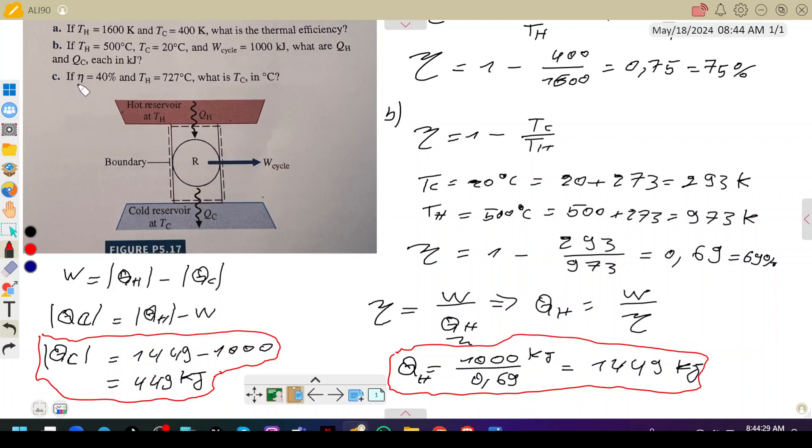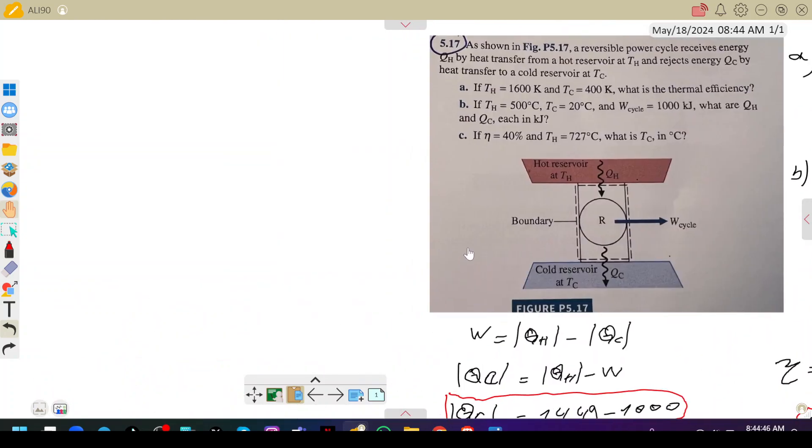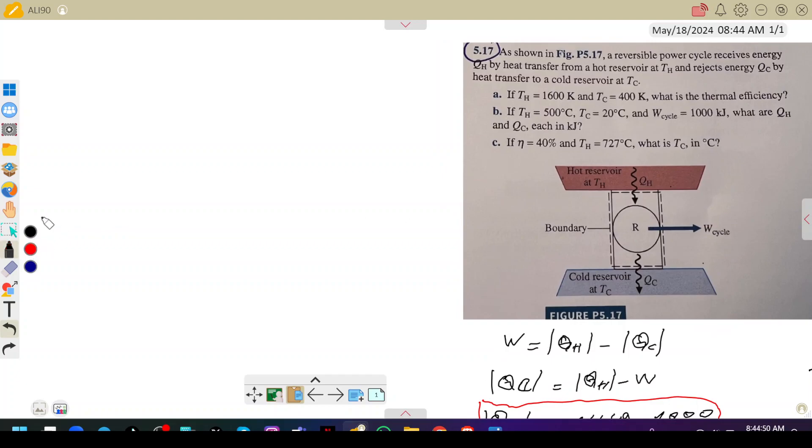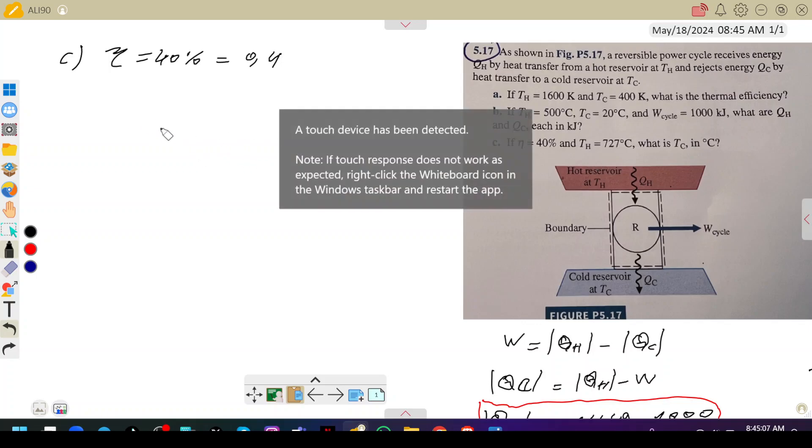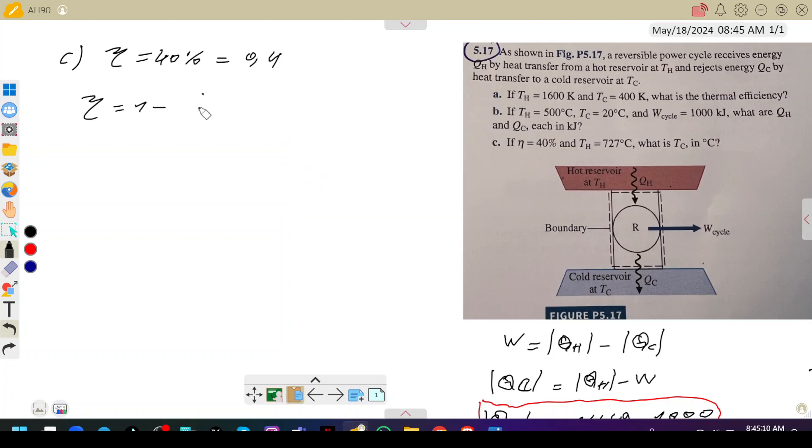For part (c), if τ is 40 percent and Th is 727°C, what is Tc in degrees Celsius? We have τ equals 40 percent, which is 0.4. We know that the expression of τ is 1 minus Tc divided by Th. Now we have the value of Th in degrees Celsius.